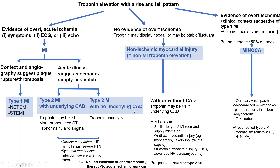An important idea for treatment: for type 2 MI as well as non-MI myocardial injury, you do not need to give anti-ischemic or anti-thrombotic therapy, and you do not need acute ischemic workup — unlike type 1 MI. You may perform ischemic workup electively or as outpatient, and it may not need to be coronary angiogram. Coronary angiography is definitely not a constant for that group; it's clinical judgment.